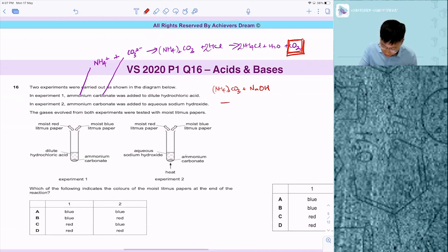You will get Na2CO3 plus NH3 plus H2O times two here. So this is the gas you're gonna get. These two are the aim of the question.